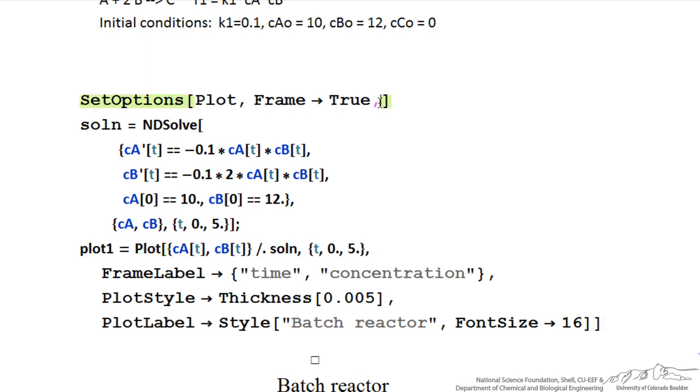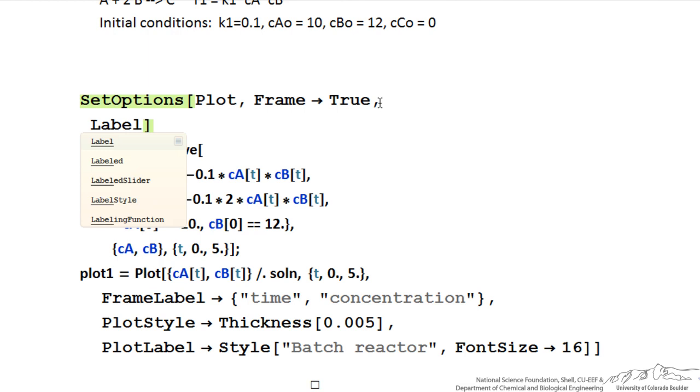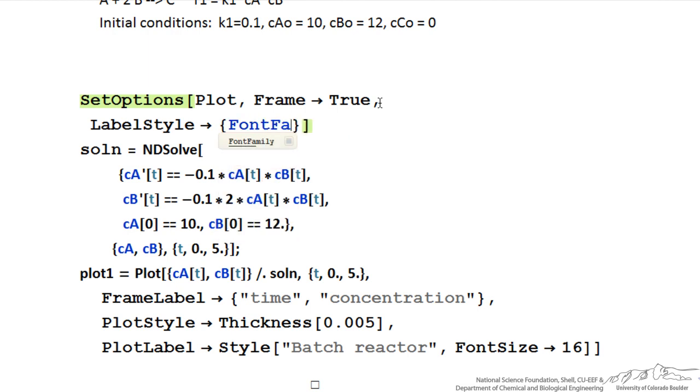And I could set some other options, one is the label style, again the arrow, then within brackets, if I want a certain font to show up, I'd like Arial, and it has to be in quotes. If I put a comma here, I can also add another command for the font size, and let's go with 14, semicolon, so now I've added these options, and I could just copy this for example for every program.